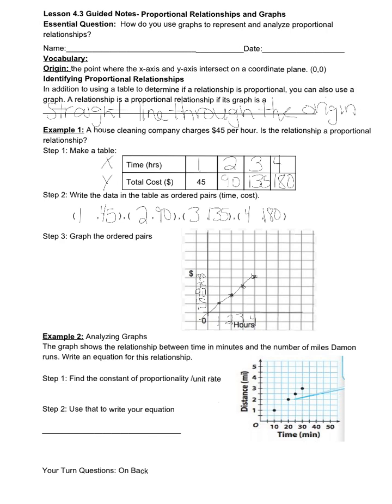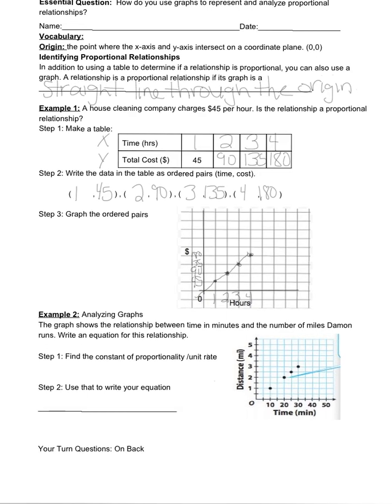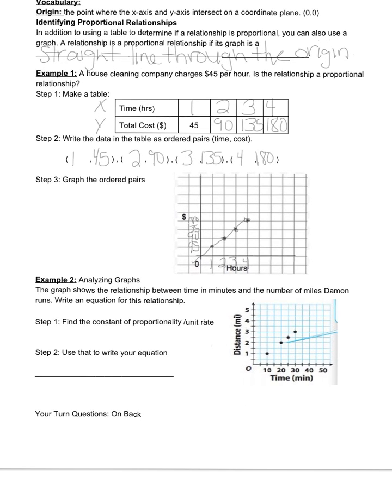Now taking a look at this through a different lens, we can analyze already-made graphs and use that to determine if we have a proportional relationship. So looking at Example 2, this graph here shows the relationship between time in minutes and the number of miles that Damon runs. So what we're going to try to do is write an equation from this proportional relationship. But before we do that, we want to double-check if we have a proportional relationship.